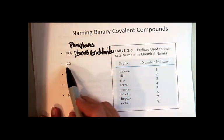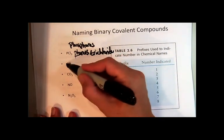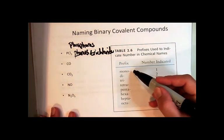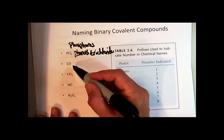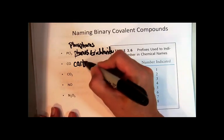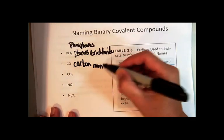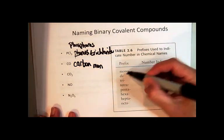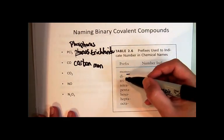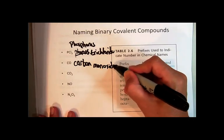In this case, carbon. If I only have one element and it's the first element, I don't have to use the monoprefix, but on the second element I do. So in this case, I don't say monocarbon monoxide, I say carbon, and I don't say monoxide when there's a vowel that follows the o in the monoprefix. I leave that second o off. So it's monoxide.